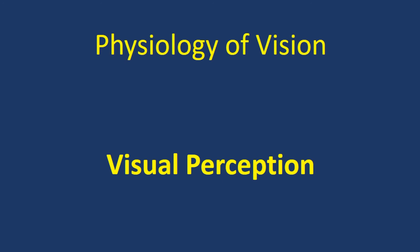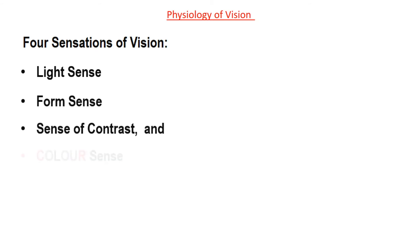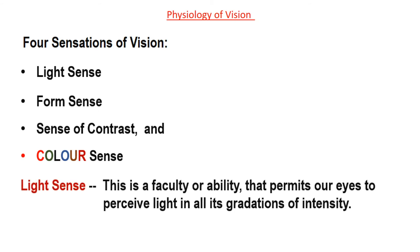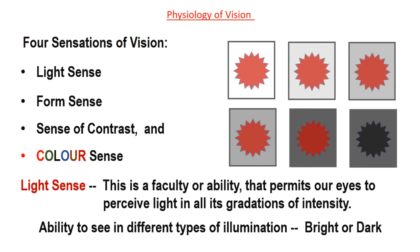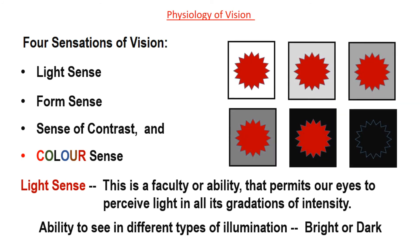Next is visual perception. When an eye looks at an object, it's not that it only sees the object — four visual sensations also occur. They are: light sense, form sense, sense of contrast, and color sense. Light sense is the faculty or ability that permits our eyes to perceive light in all its gradations of intensity — meaning the ability to see in different types of illumination, bright or dark. For example, a red colored object can be seen in different types of illumination from bright light to dark, unless it can hardly be seen in extreme darkness.